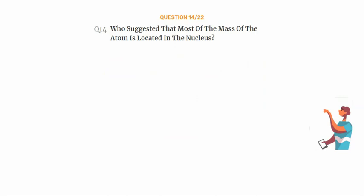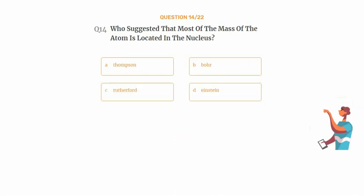Question number 14. Who suggested that most of the mass of the atom is located in the nucleus? Option A: Thompson. Option B: Bohr. Option C: Rutherford. Option D: Einstein.